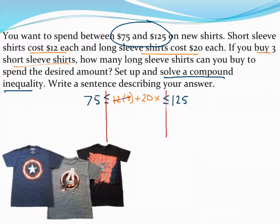And like I said, I'm going to just change 12 times 3 into 36 right away. So really in the middle here I have 36 plus 20x. So I think the first thing I'll do is let's go ahead and subtract 36 from all parts of this to get rid of that 36.